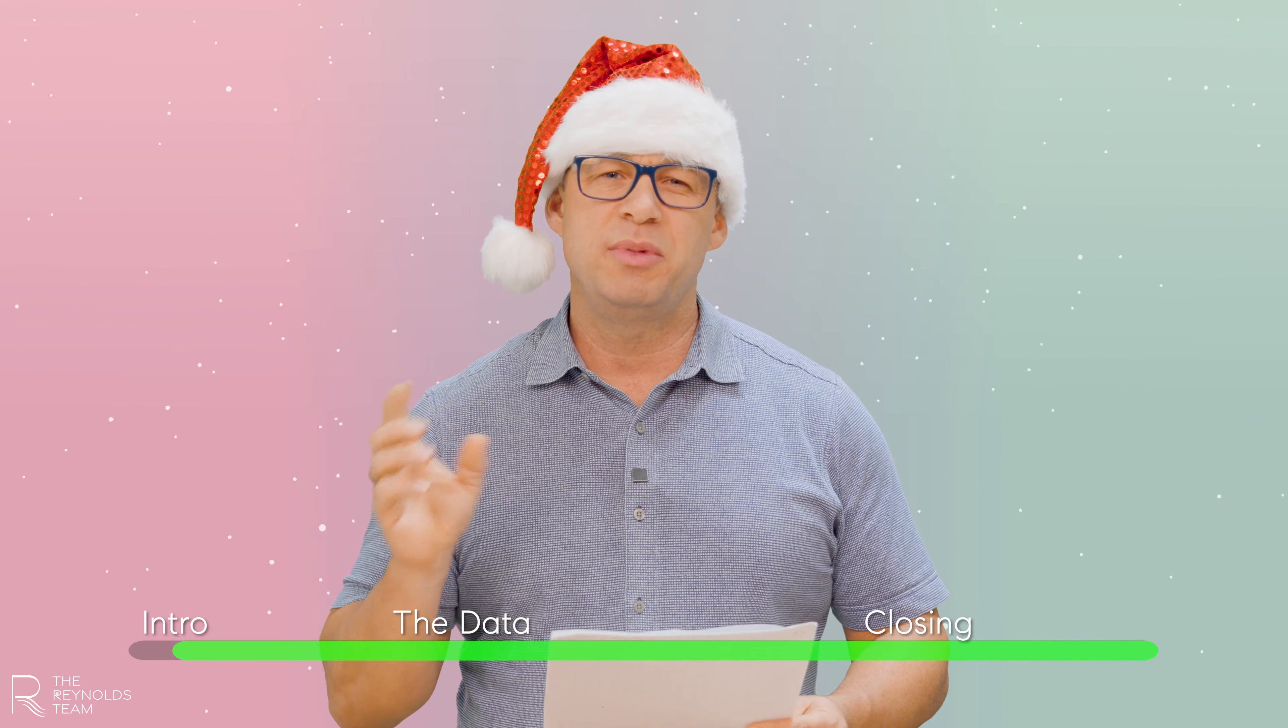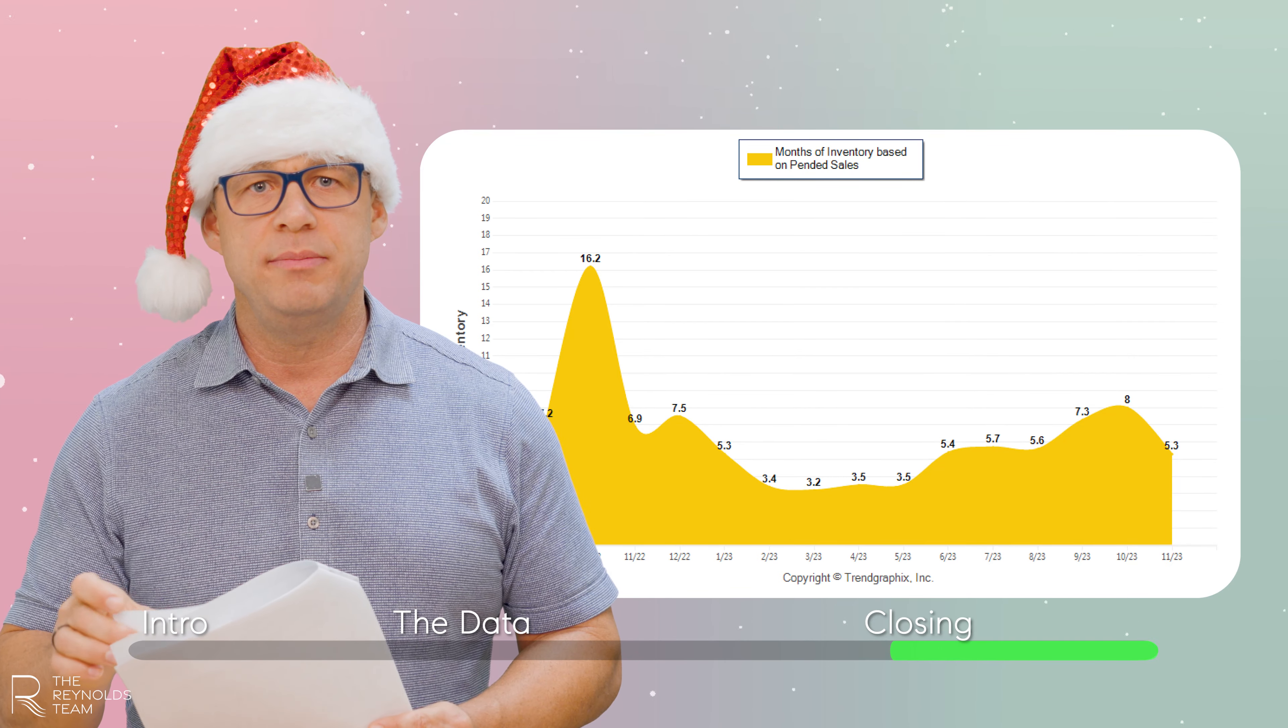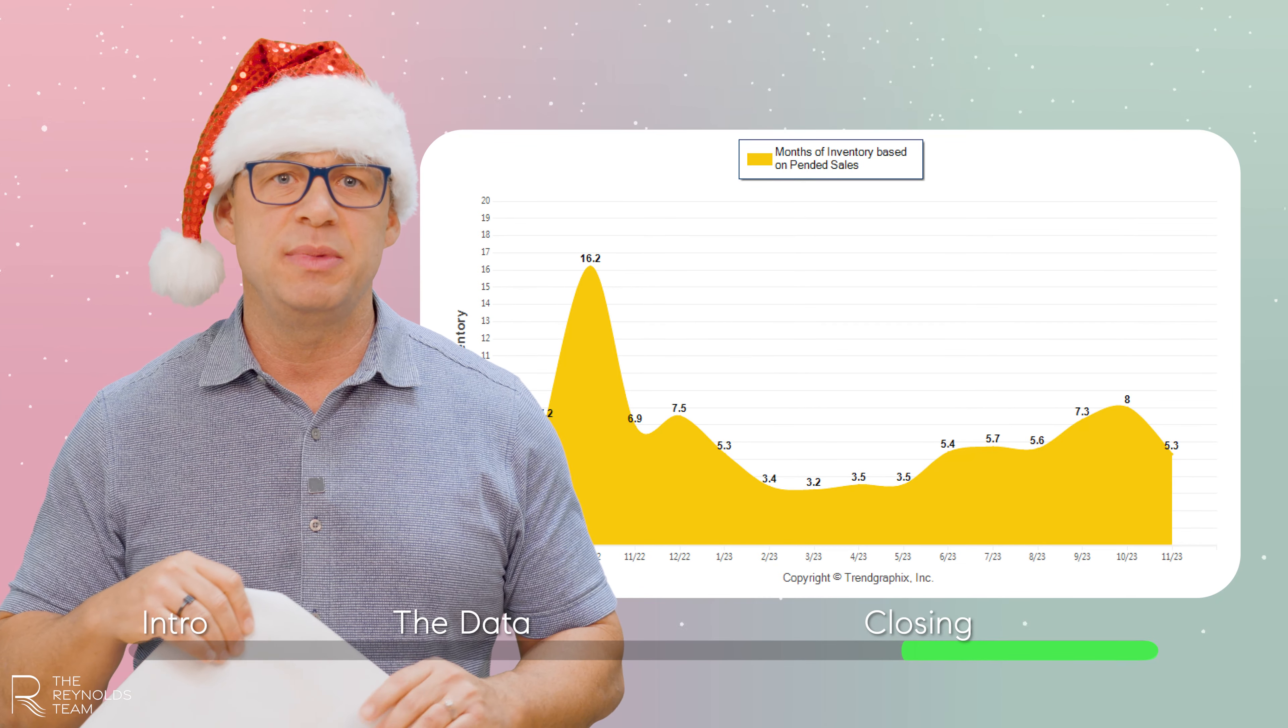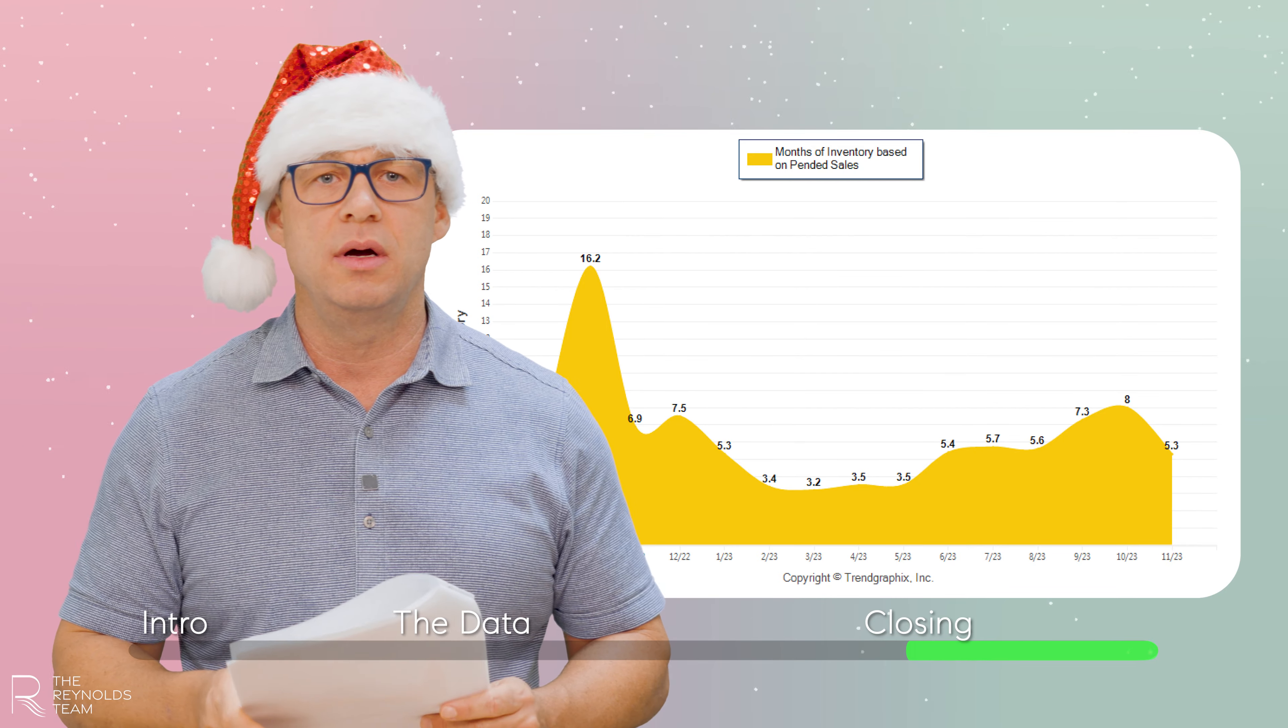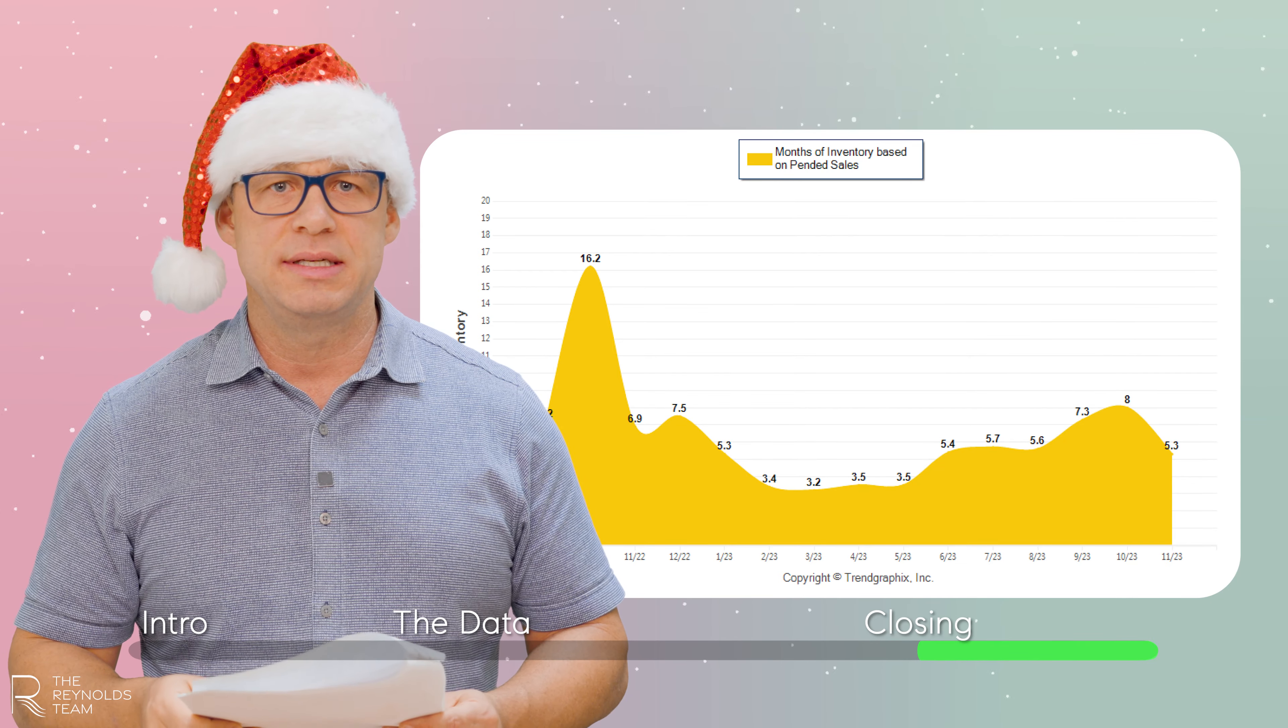Then moving on to months of inventory, we actually ticked down to 5.3 months of inventory, which is kind of abnormal for recently. But the normal market for the beach side market pre-pandemic was four to six months, was totally normal. So we're approaching that period of time right now. That's based on pending sales, meaning if another home didn't come on the market, how many months it would take to sell all the existing inventory.